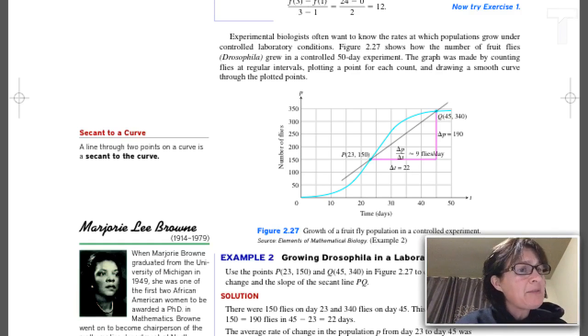We'll use that same expression from before. Here we don't have a formula f(x), but we do have two ordered pairs. So we'll compute change in y over change in x: change in the number of fruit flies divided by the number of days.